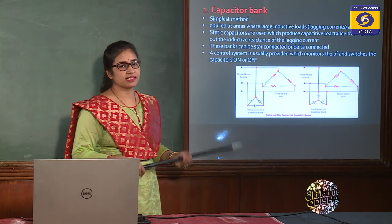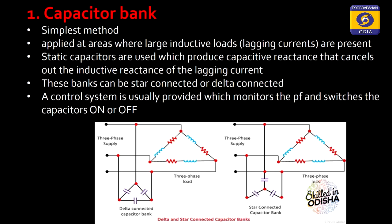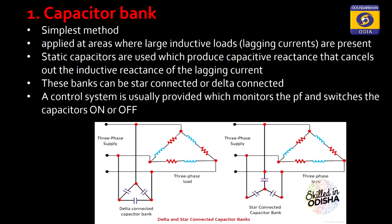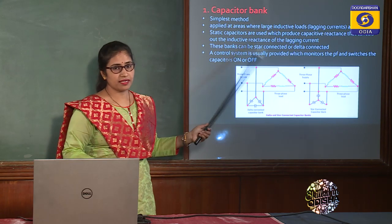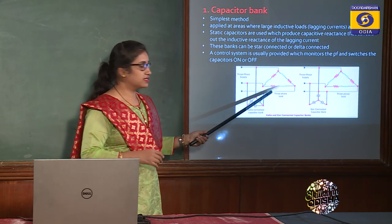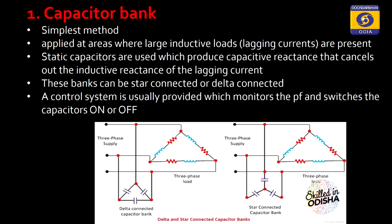The simplest equipment is a capacitor bank — a static capacitor. It is connected in parallel with the load and injects leading current into the power system so that the lagging power factor is stabilized. For a three-phase load, it is connected in star or delta configuration. Advantages include being lightweight and easy to install.